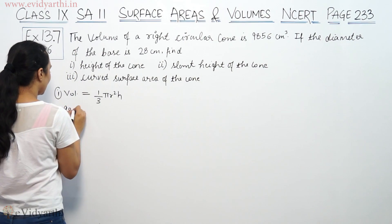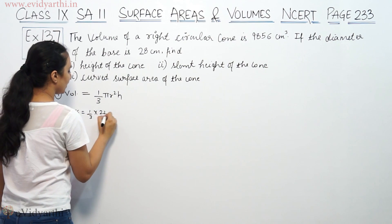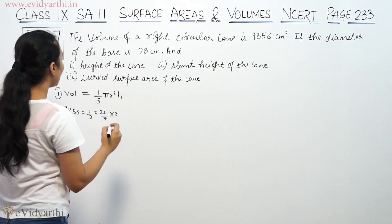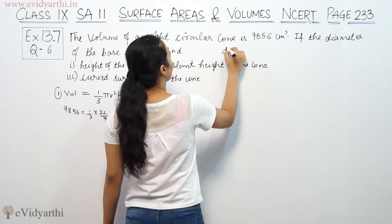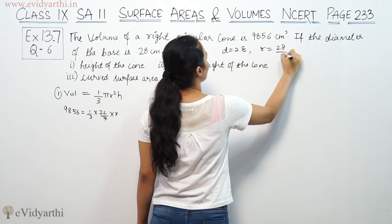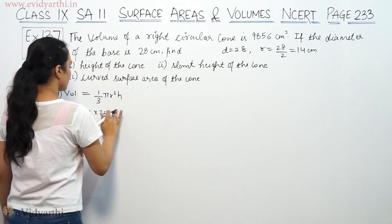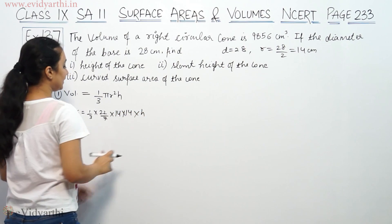Volume equals 1/3 × 22/7 × r² × h. We have to find the radius of the base. Diameter is equal to 28, so radius is diameter by 2, that means 14 cm. So radius 14 × 14, we have to find the height.